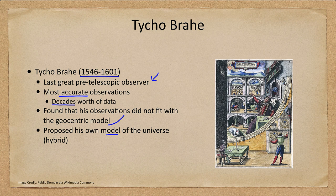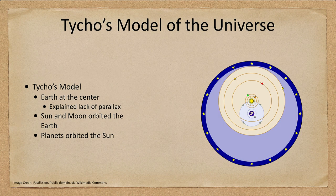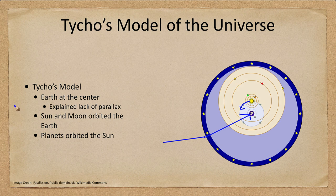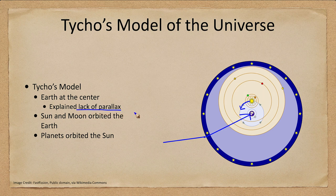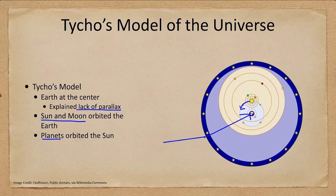So Tycho gave his own model of the universe: the earth remained at the center, the sun orbited around earth, but the planets orbited around the sun. This explains some of the motions, such as what Galileo would eventually find with the phases of Venus — explaining that Venus would go through a complete cycle of phases. It also explained the lack of parallax because earth was not moving. So sun and moon orbit earth, the planets orbit the sun, and there is the great sphere of the stars. This fit Tycho's observations and accounted for the fact that even with his extremely accurate measurements he was unable to detect parallax.